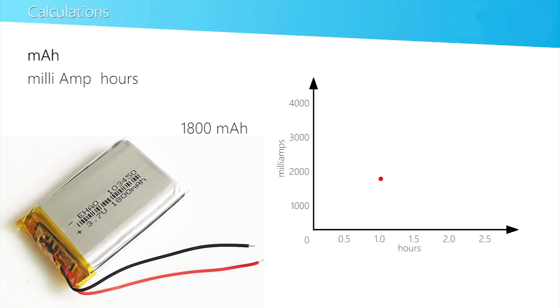It also means it could supply 900 milliamps for two hours or 3600 milliamps for 30 minutes. The performance may be characterised by this across reasonable limits.